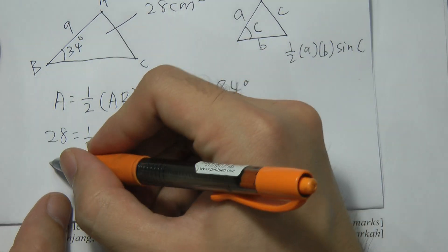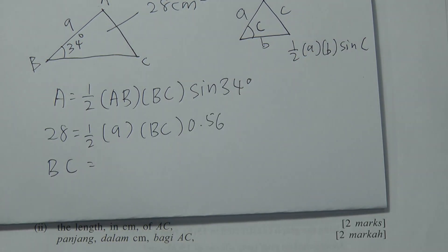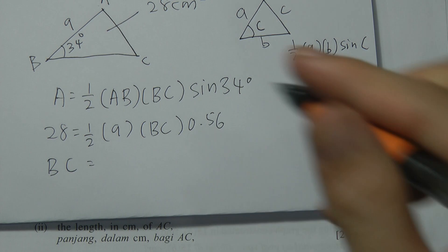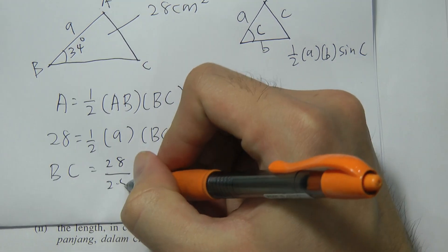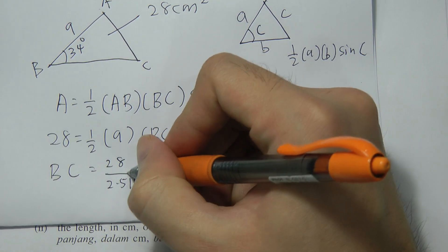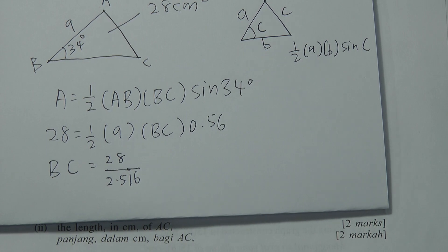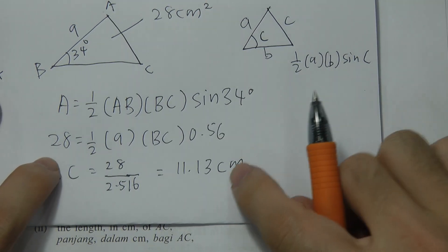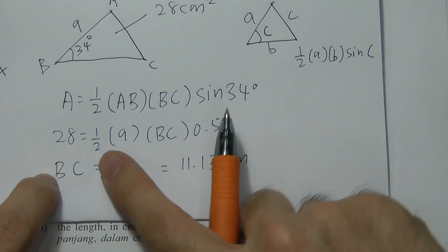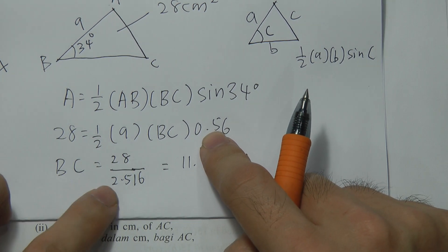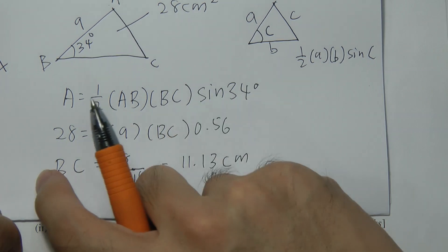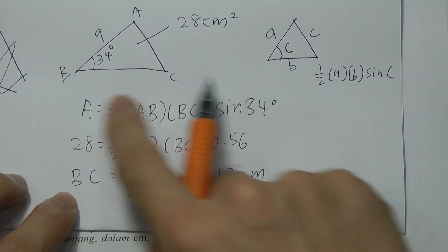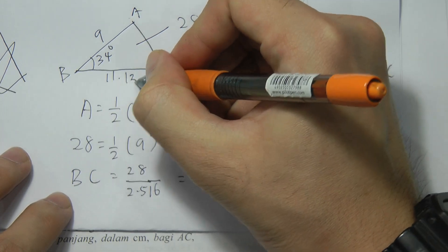We solve the equation for BC. So BC = 28 divided by (½ × 9 × sin(34°)), which gives 28 divided by 2.516. Pressing the calculator, we get the length BC equals 11.13 cm.